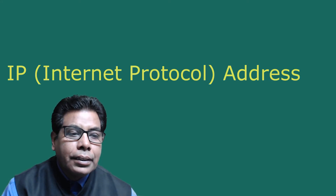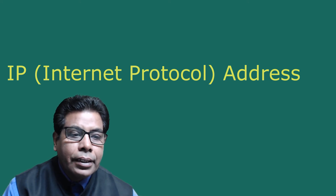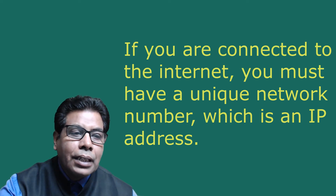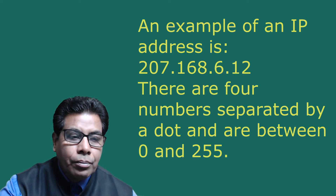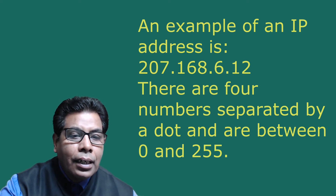Let us understand IP address — internet protocol address. An IP address is a unique number used to identify the computer on the internet. If you are connected to the internet you must have a unique network number which is an IP address. An example of an IP address is 207.168.6.12 — there are 4 numbers separated by a dot, each between 0 and 255. The reason is that we use 8 bits to represent these numbers, so the numbers are 0 to 255 in decimal, or 00 to FF in hexadecimal.